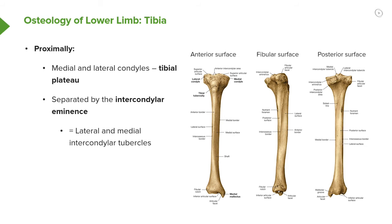Proximally we can see we have medial and lateral condyles of the tibia. Here we have our lateral condyle and here we have our medial condyle, visible both anteriorly and posteriorly. They are separated by the intercondylar eminence — a small elevation of bone that sits on top of the otherwise flat tibial plateau surface — consisting of lateral and medial intercondylar tubercles, which as we'll see are important.